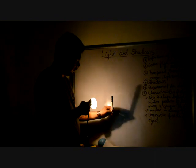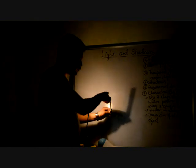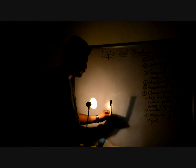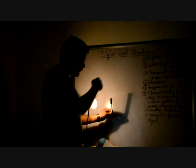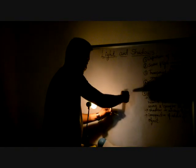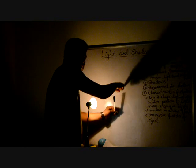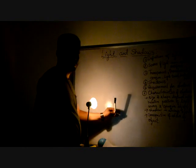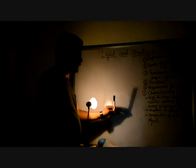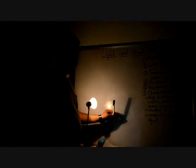To recap: we need three things for a shadow — a light source, an opaque object, and a screen (the screen can be a wall or anything you want to use). When an opaque object comes in the path of light, it makes some black patches. These black patches or black regions are known as shadows.